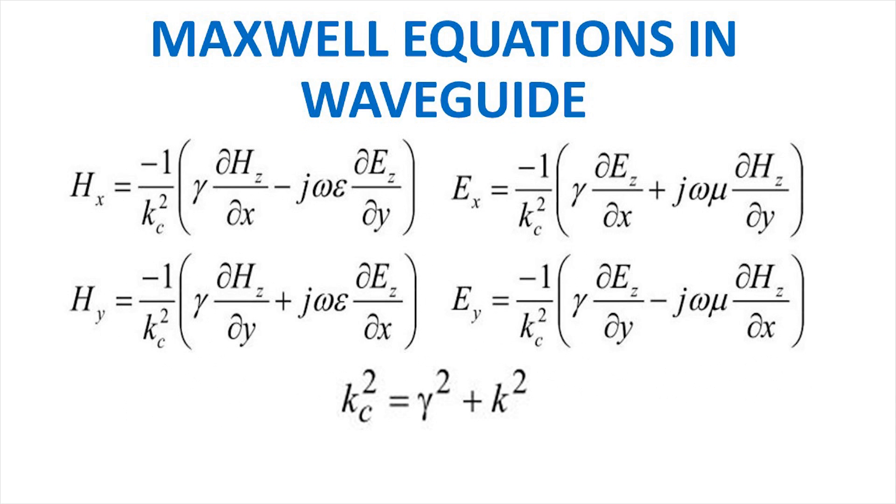Next, we have denoted all the remaining components in terms of Ez and Hz by rearranging the six previous equations. Kc square used in the equations is equal to gamma square plus k square. It is an eigenvalue. So if we have Ez and Hz, we can obtain all other components of electric and magnetic field in a waveguide.